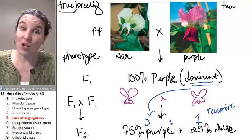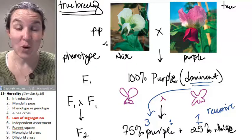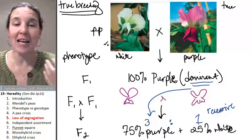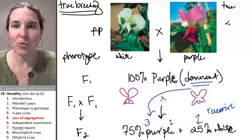We also know that in a true breeding plant, it has to be homozygous. No matter what happens, we have to end up with the same phenotype. So it has to be true breeding.